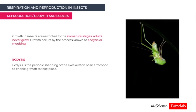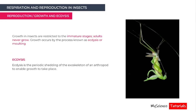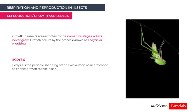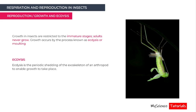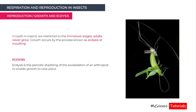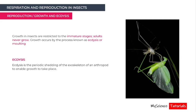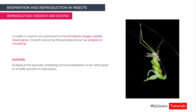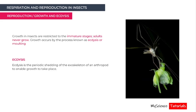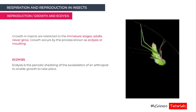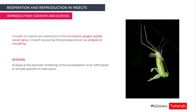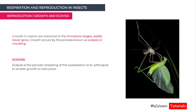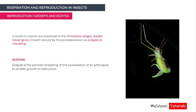Growth in insects is restricted to the immature stages; adults never grow. Growth occurs by a process called ecdysis, or moulting — the periodic shedding of the exoskeleton of arthropods to enable growth. As seen in the picture, a grasshopper is shown undergoing ecdysis, shedding its exoskeleton in order to grow.